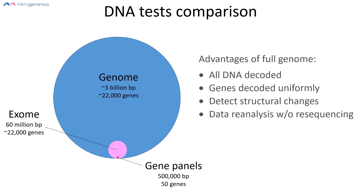The primary advantage of using full genome sequencing is that all of the DNA is decoded. Another big advantage is that all genes can be decoded uniformly, which is precisely what allows looking at structural changes within the genome that other smaller-scale tests cannot. The fact that you're looking at all of the DNA also allows for subsequent future reanalysis of your DNA sequence without ever needing to re-sequence. So you only need to do one test in a lifetime, but you have a lifetime of analysis.